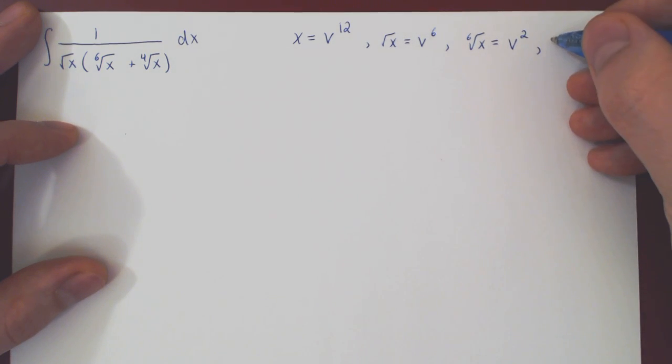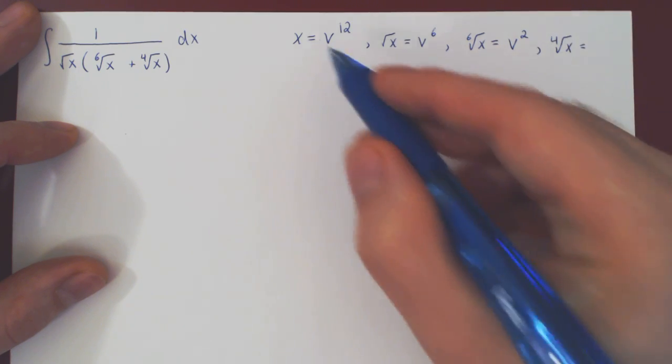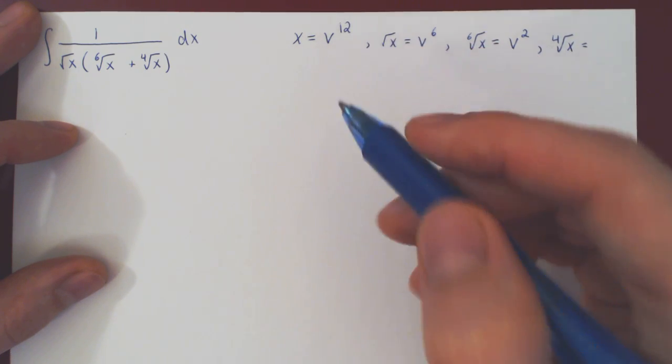And the fourth root of x, this is the power of 1 quarter. Well, 12 over 4 is 3.